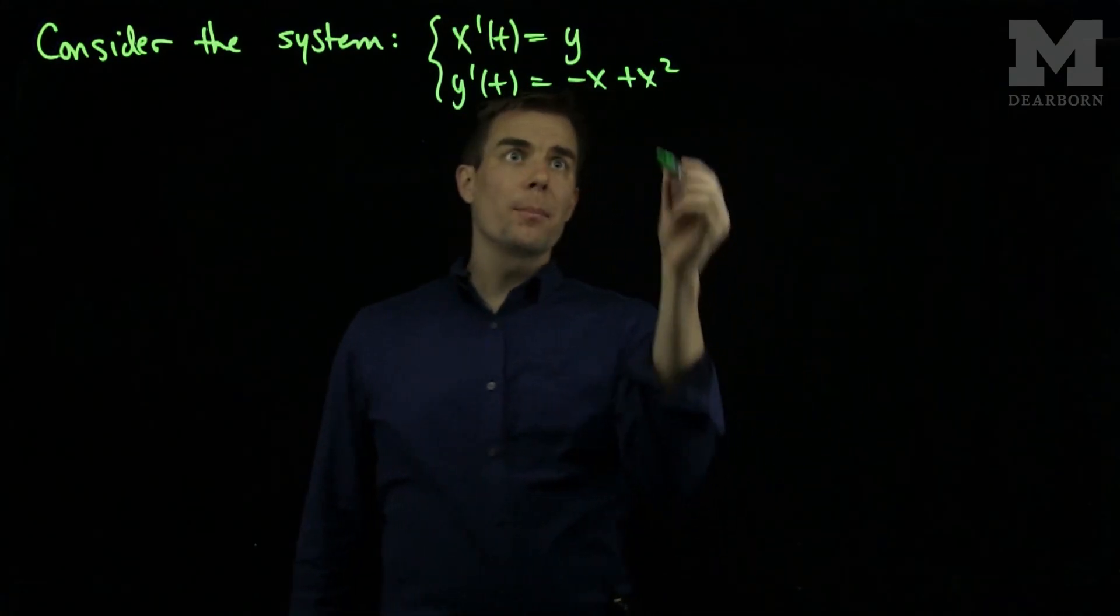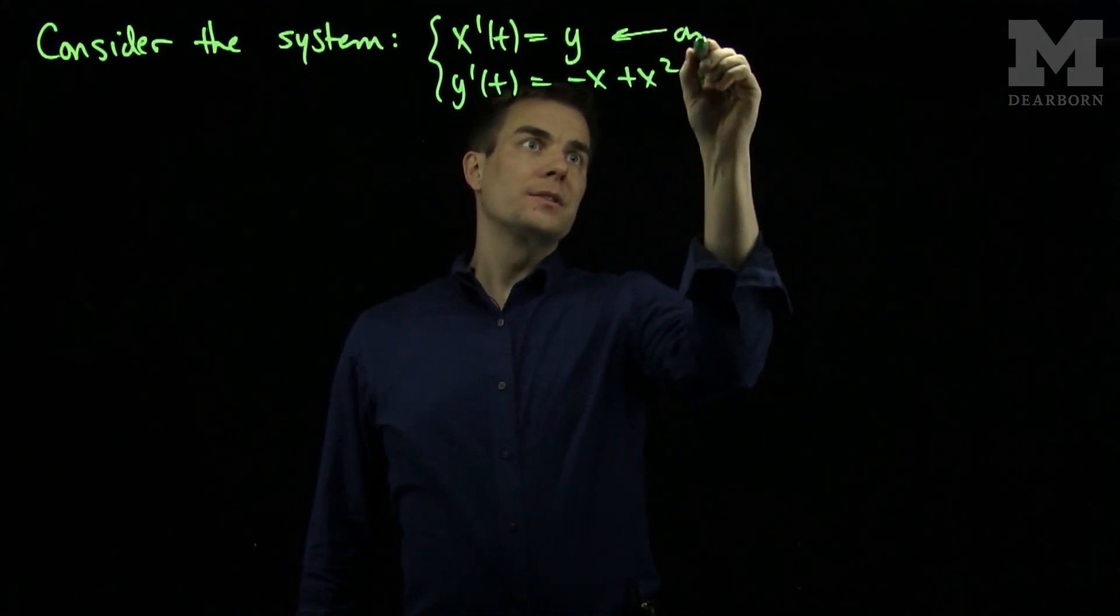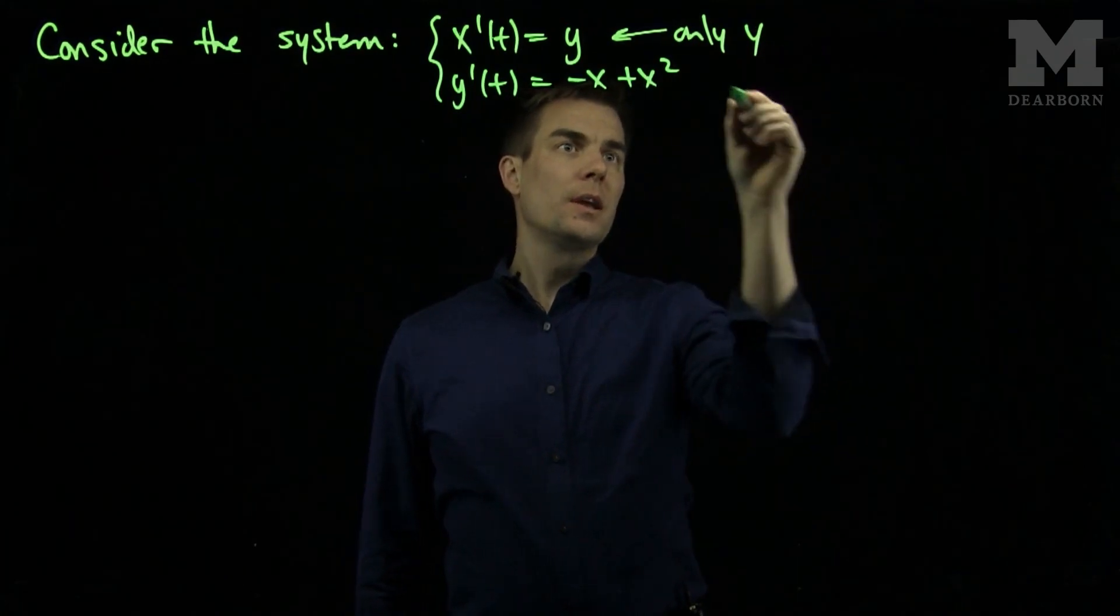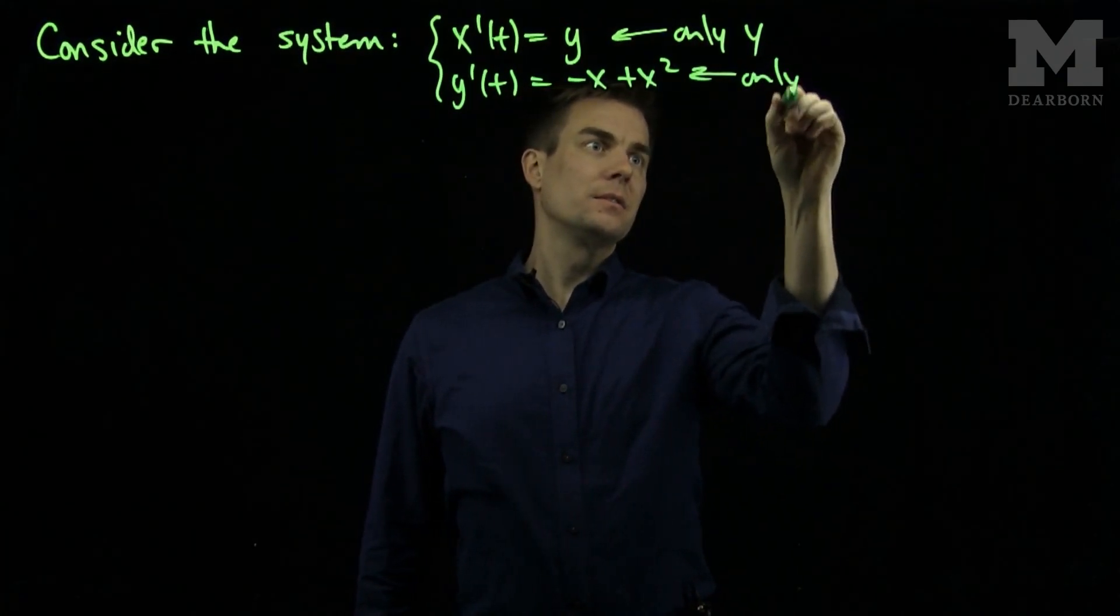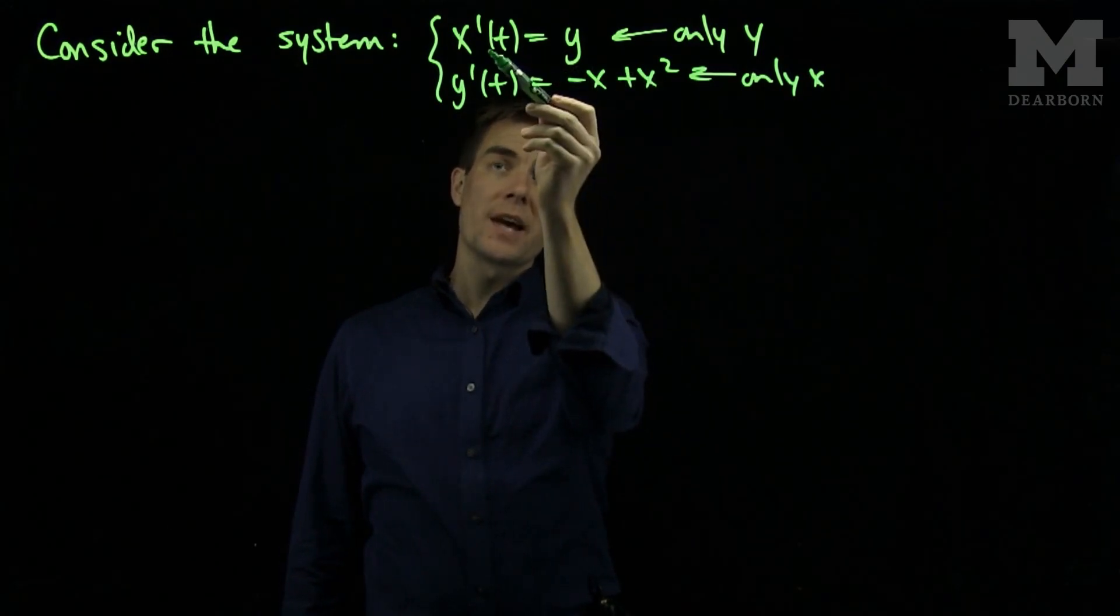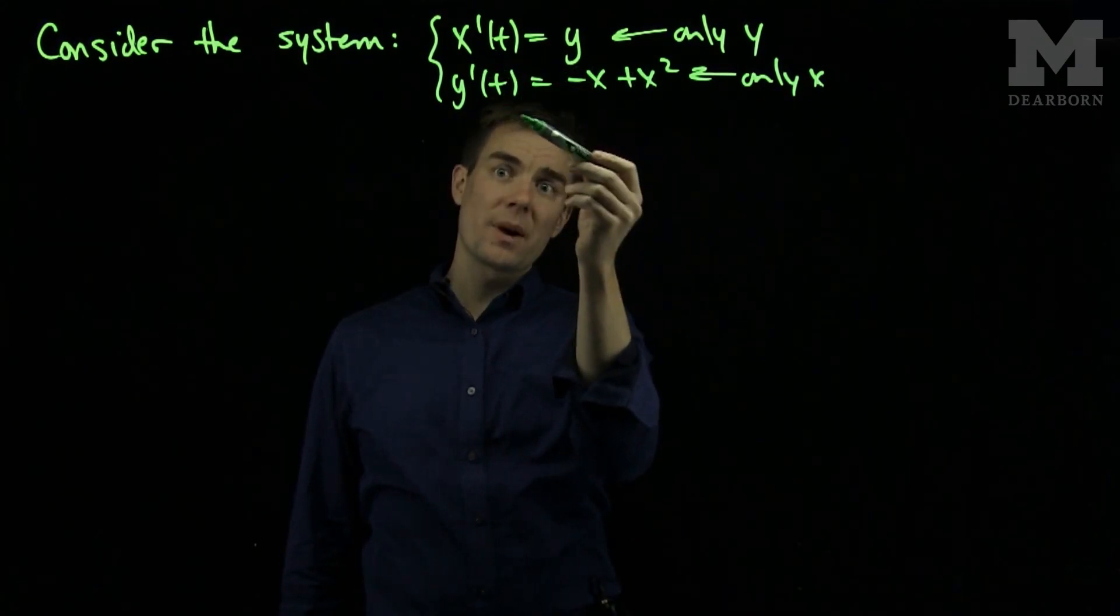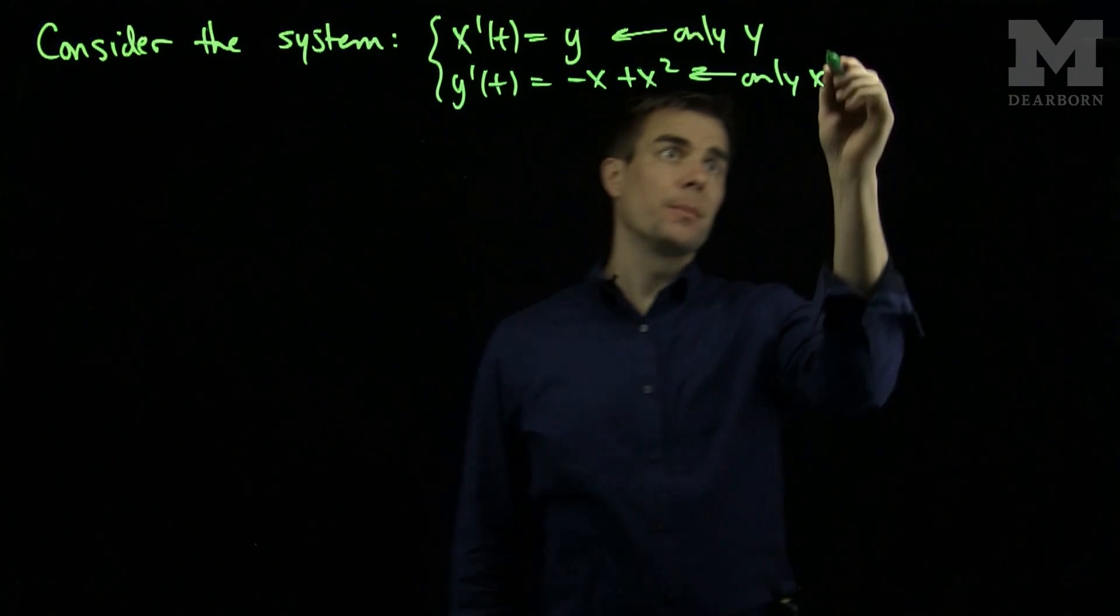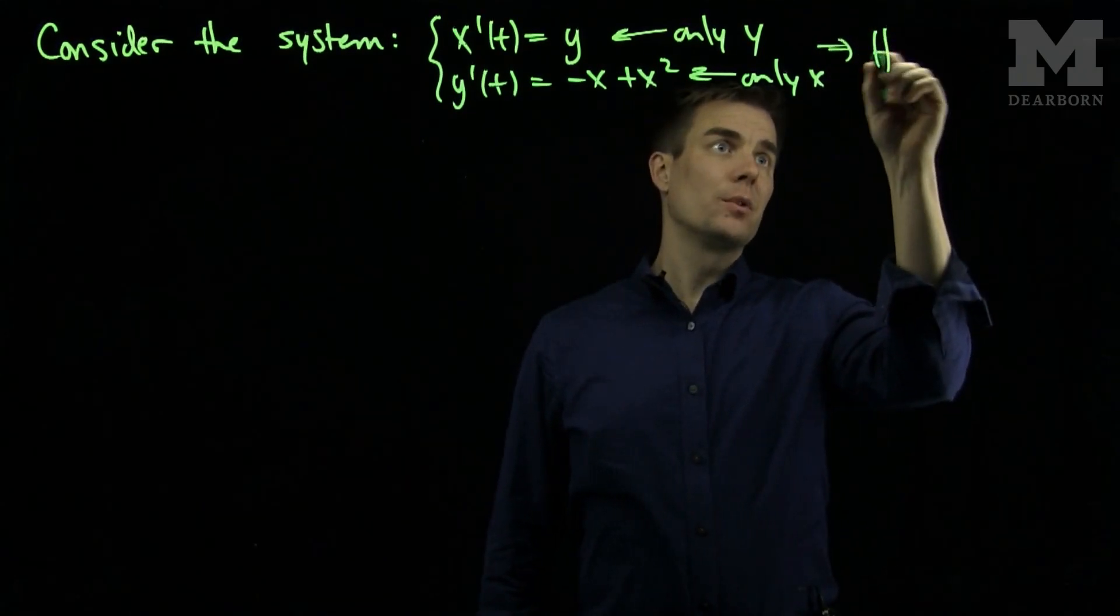We notice when the system is decoupled when there are only y's and only x's in the corresponding equations, so when there's only y's in the x' equation and when there's only x's in the y' equation, it's a Hamiltonian system. This implies the system is Hamiltonian.